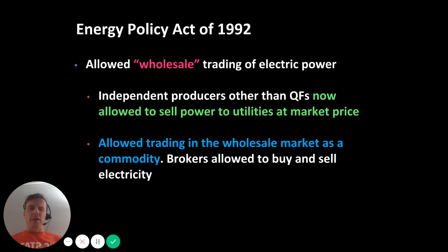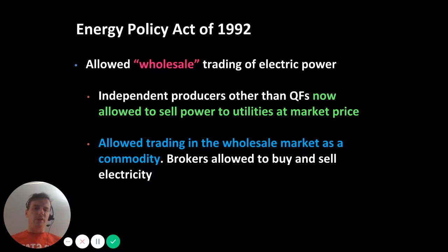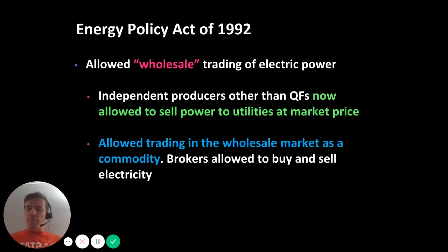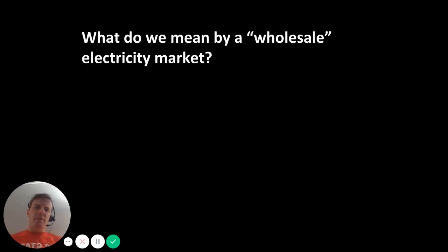This allowed for the presence of electricity brokers — for-profit entities that would essentially buy electricity from one party and sell that same electricity to another, even though they were not actually involved in the physical delivery of electricity. If they were able to buy electricity at a cheap price from one person and sell it to another, they could make profits.